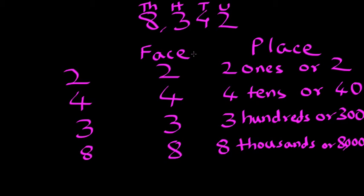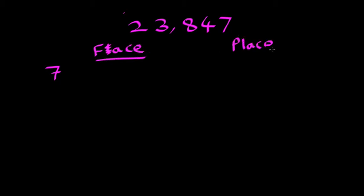Now let us look at a larger number. Let's say the number is 23,847. So for 7, I am again going to do face and place. So the face values are going to be the same as that number. So for 7, it's going to be 7. For 4 face value is 4.